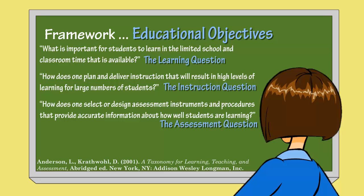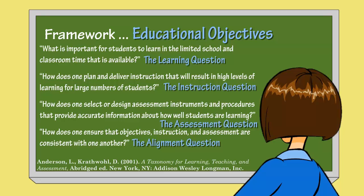Finally, Anderson and the others ask: how does one ensure that objectives, instruction, and assessment are consistent with one another? Without alignment, instructions may not influence student performance. The table will allow for comparison of all three pieces — objectives, activities, and assessments. The greater they are aligned, the stronger the connections.